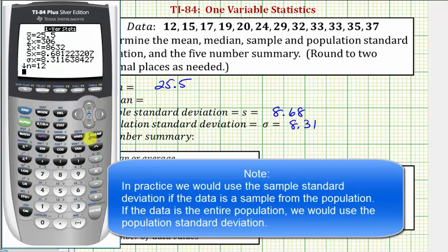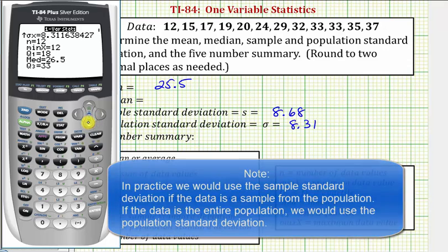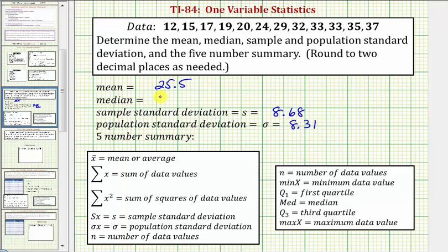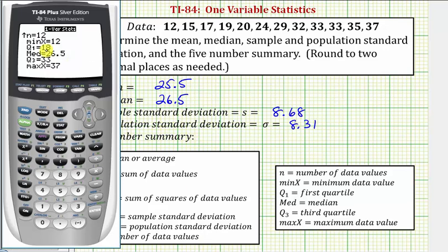Now we'll arrow down to the second page. Notice how the median is 26.5. Using the method on the TI-84, the five number summary is going to be the min, Q1, the median, Q3, and the max. So we have 12, 18, 26.5, 33, and 37.